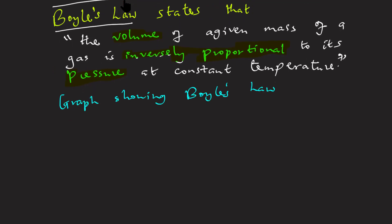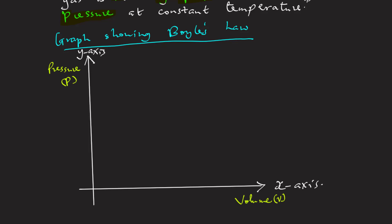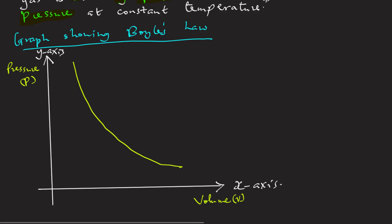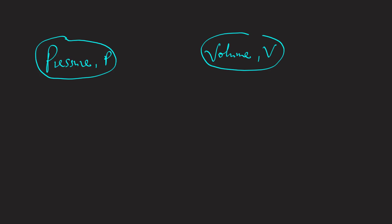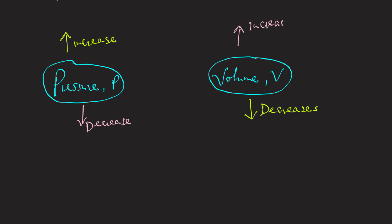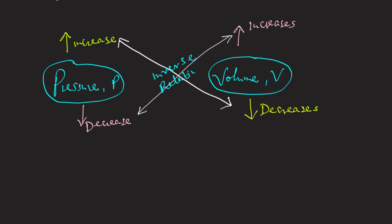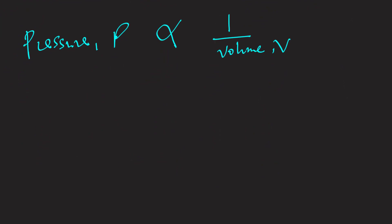If we plot a graph of pressure versus volume when the temperature is kept constant, we will see the following diagram. Boyle's law can be expressed mathematically. Because if you increase the pressure the volume decreases, and when we decrease the pressure the volume increases, this relationship is an inverse relationship. Therefore, we can write that pressure P is inversely proportional to volume V, written as P ∝ 1/V.